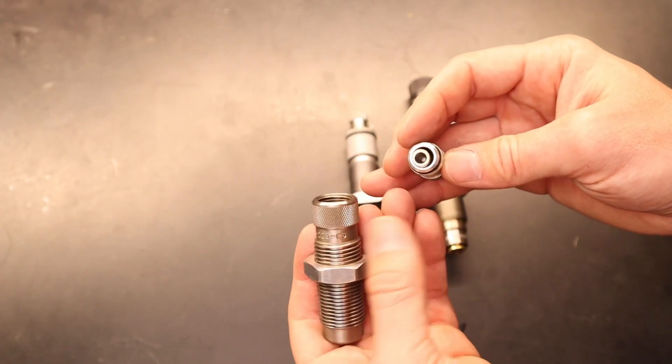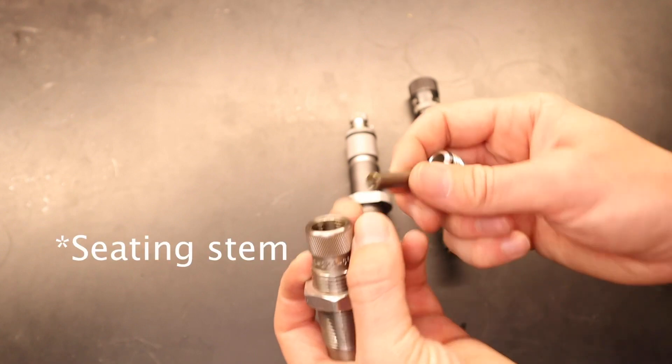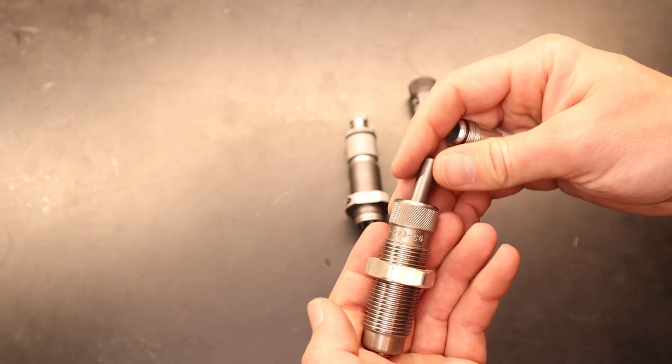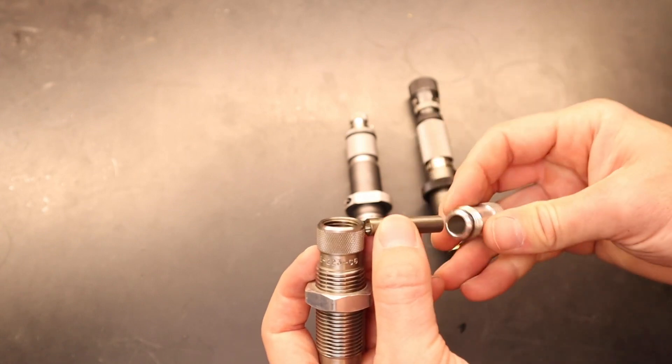Now taking a look at the internals, it is super simple. This little collar right here is what comes in contact with the bullet, and that is what seats it down into the case as you lift your ram.